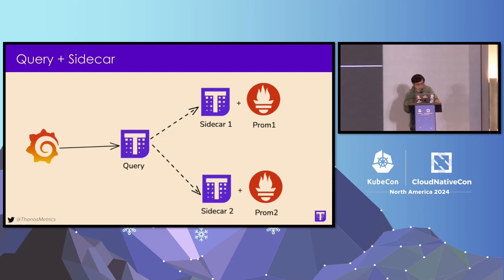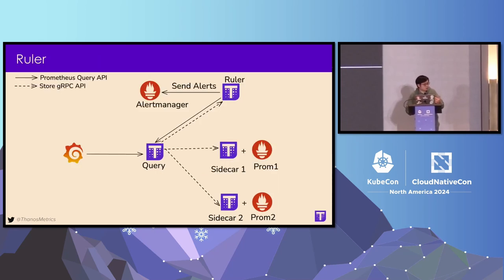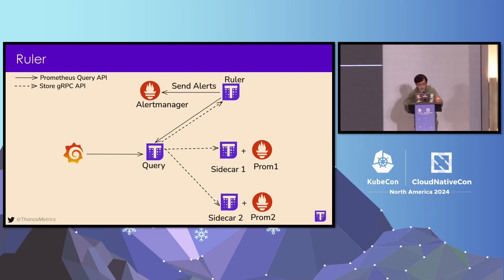This is basically the most simple setup for Thanos, and for a lot of use cases it works really well. For rule evaluation — a user usually starts from using Prometheus to evaluate recording rules and alerting rules. But for certain use cases, you want something similar to your global query view. So you can deploy a component called Thanos Ruler, which queries Thanos Query for rule evaluation and stores the recording rule metrics and alert metrics on its local database. It's also able to send alerts to Prometheus.